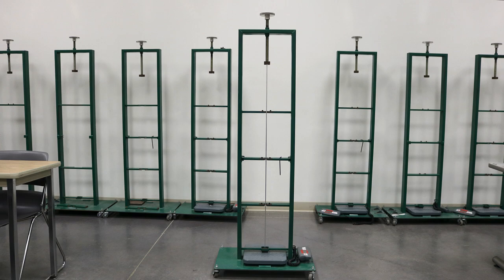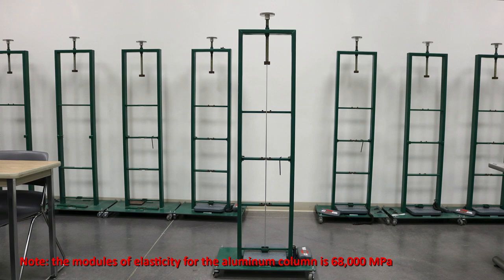In the first part of this lab, we will be using a model column test to determine elastic buckling. In this case, an aluminum column will be tested under various support conditions. The measured buckling capacity will be compared with a predicted capacity using measured dimensions. Note that the modulus of elasticity for the aluminum column is 68,000 MPa in this lab.